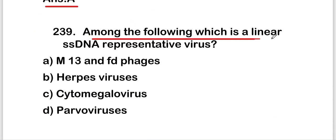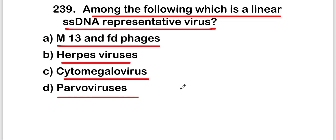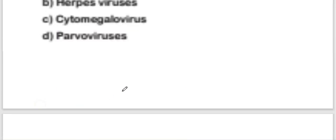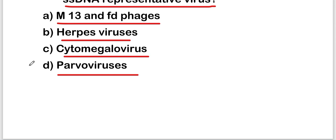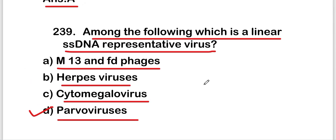The next question: among the following, which is a linear single-stranded DNA representative virus? Options are M13 and FD phages, herpesvirus, cytomegalovirus, or parvovirus. The right answer is option D — parvovirus is a linear single-stranded DNA representative virus.